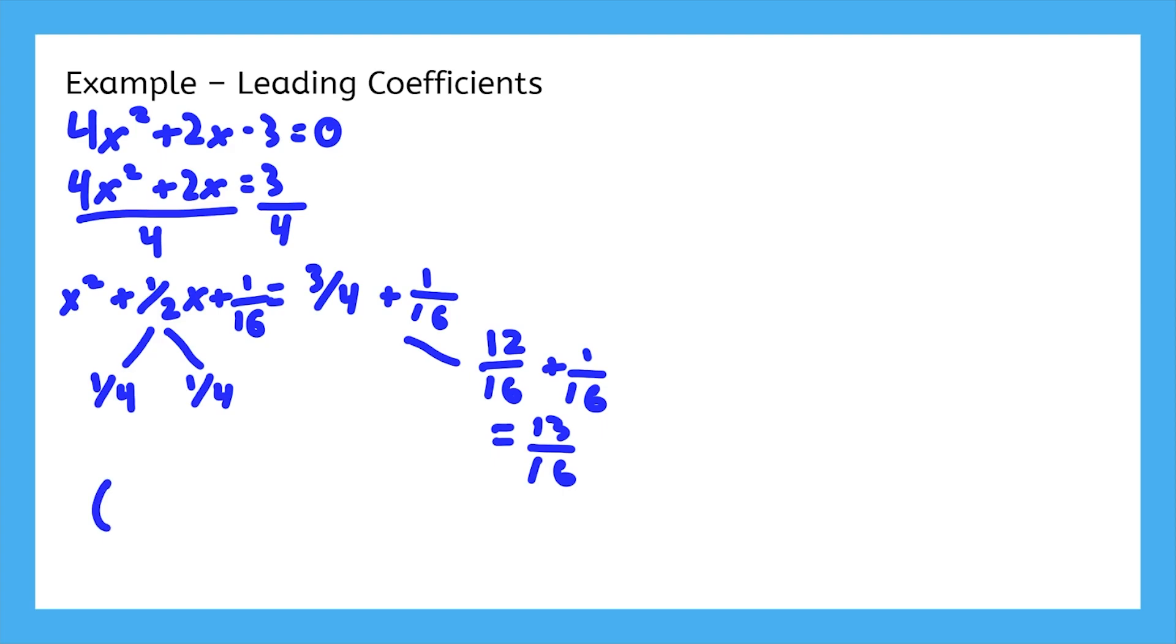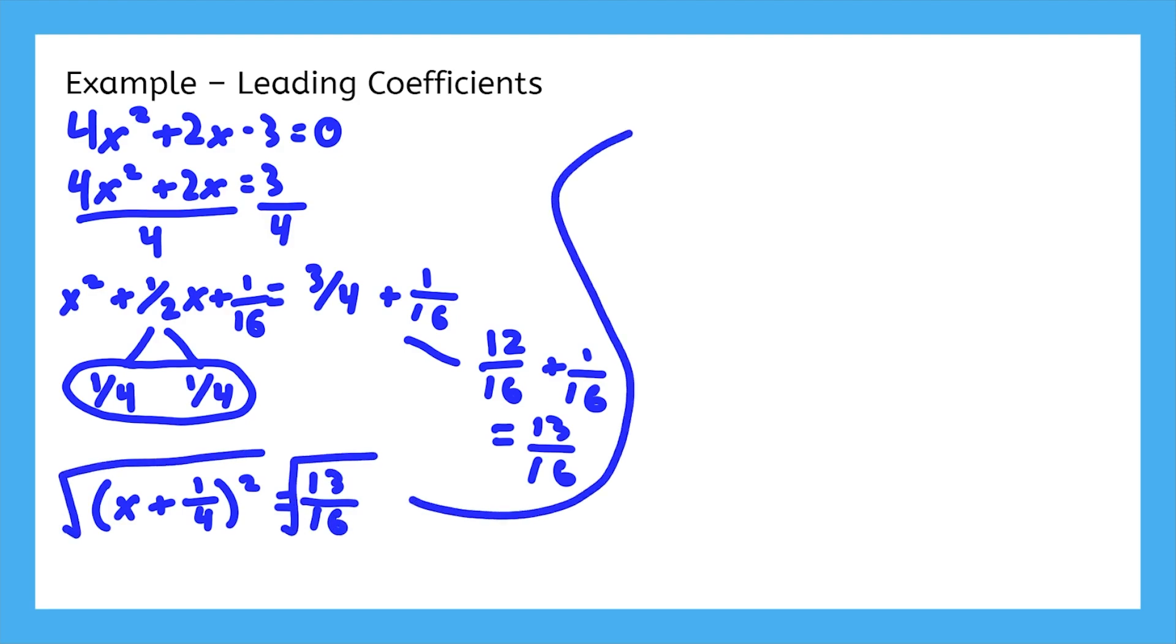So we can factor the completed square, x plus 1 fourth squared, because that's the value we squared to get 1 sixteenth, and the right side is 13 sixteenths. Cancel the square with a square root, and 16 is a perfect square, we can simplify it to just 4.